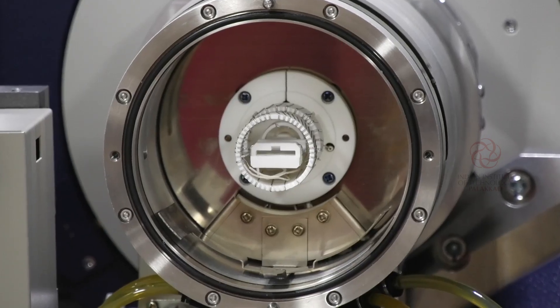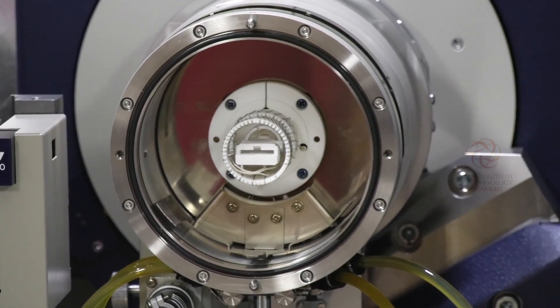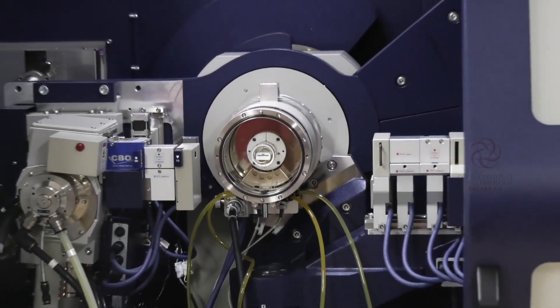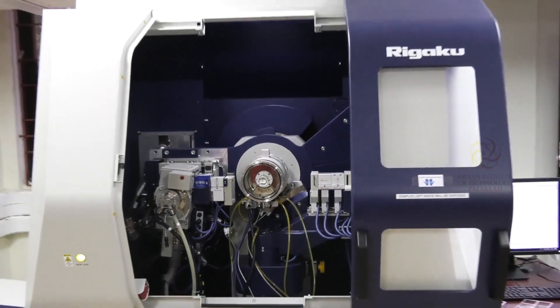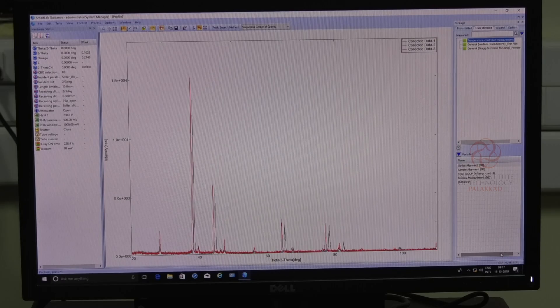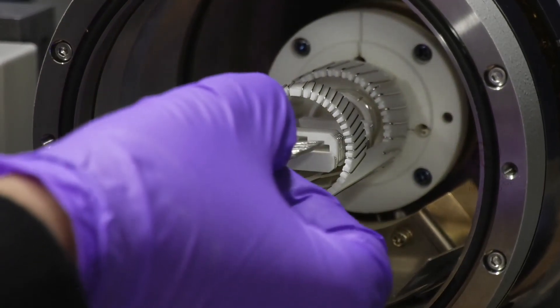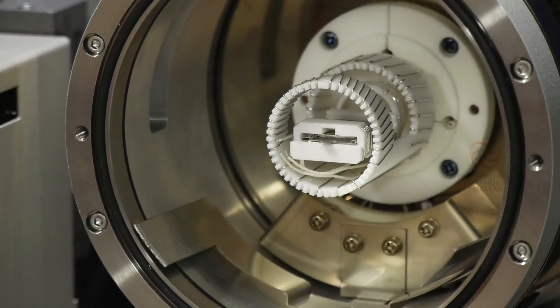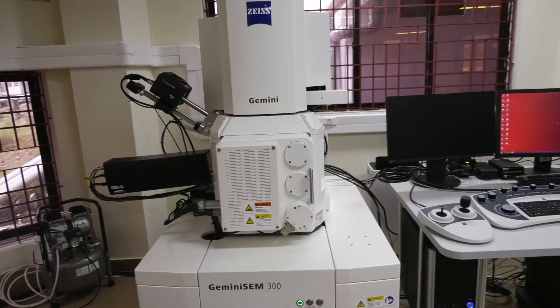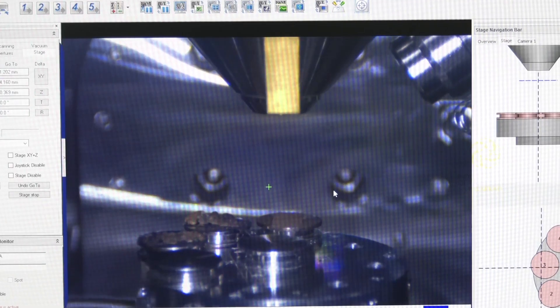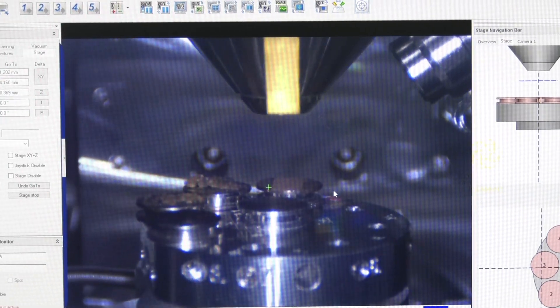The X-ray diffractometer is a powerful equipment to study powder and thin film samples up to 1500 degrees Celsius with additional features like pole figure analysis, residual stress measurement, X-ray reflectivity and small angle X-ray scattering. The CIF is also equipped with the state of the art scanning electron microscope.